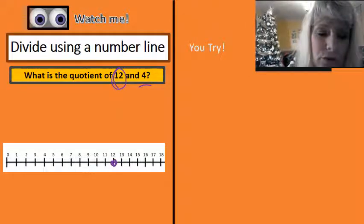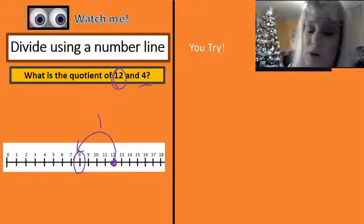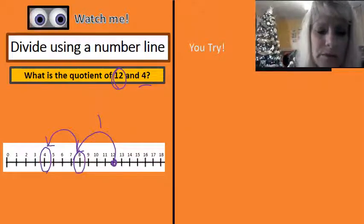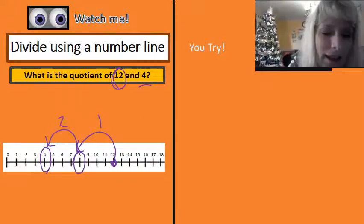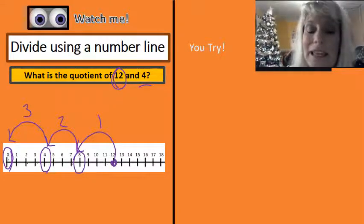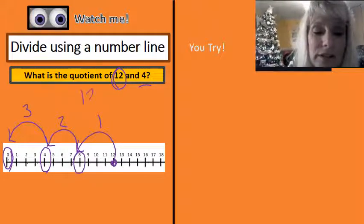One, two, three, four — that is one jump. And we're going to number them just like we did with multiplication. One, two, three, four — there is my second jump. And one, two, three, four — that is my third jump. So here I have just discovered that 12 divided by four equals three.